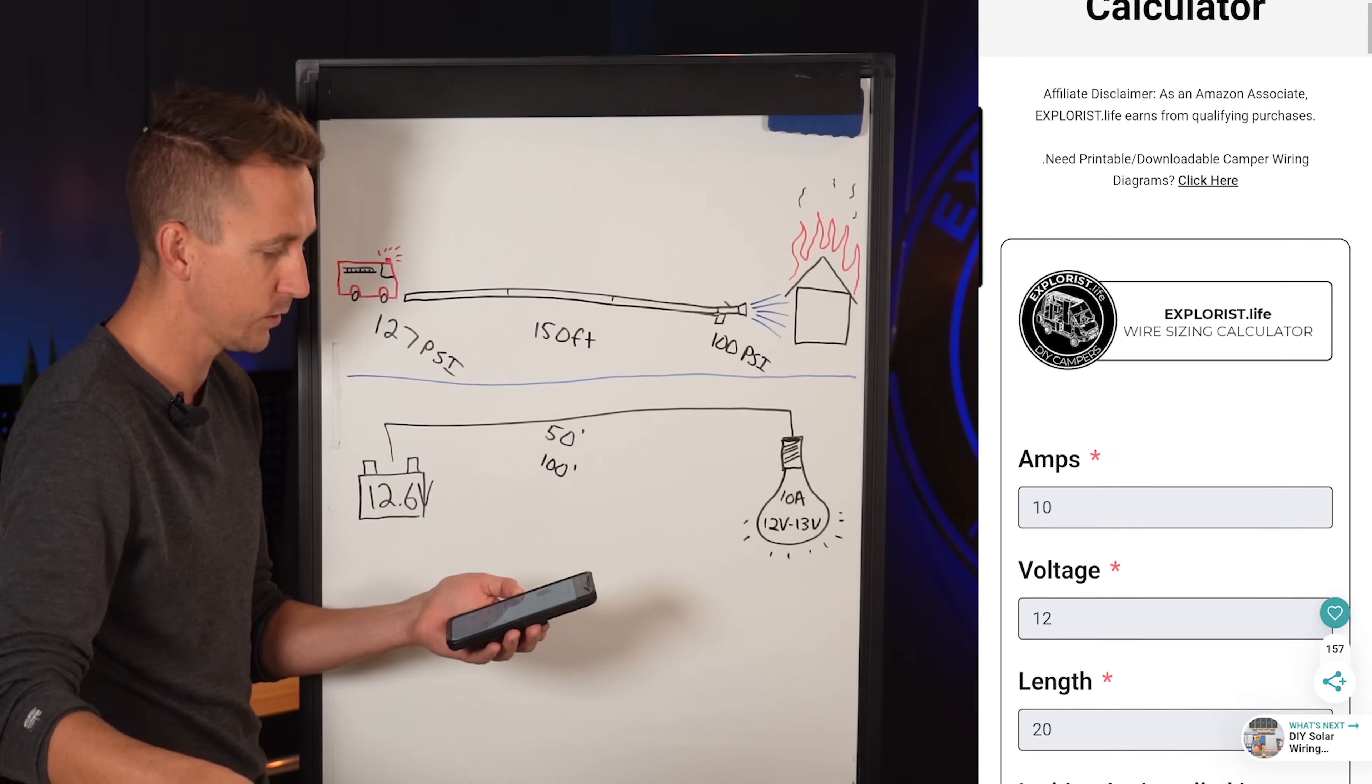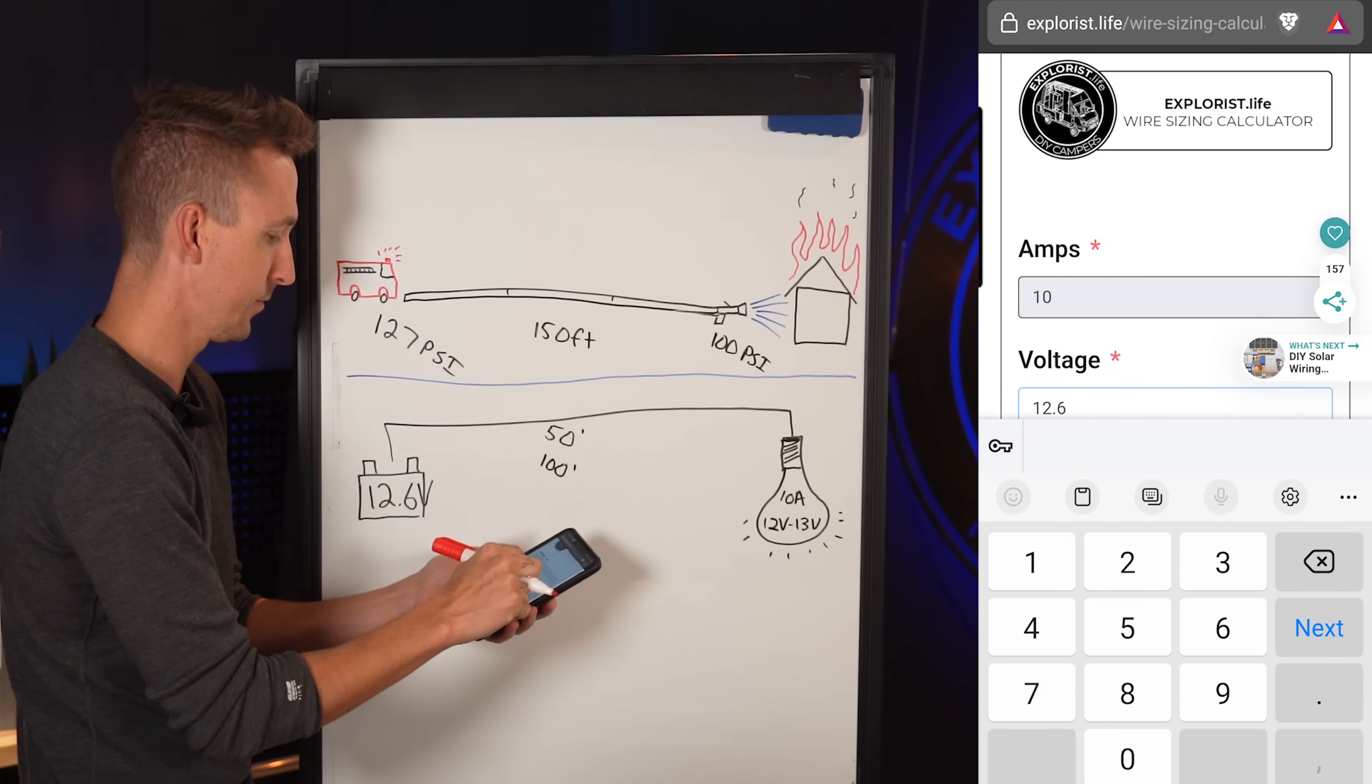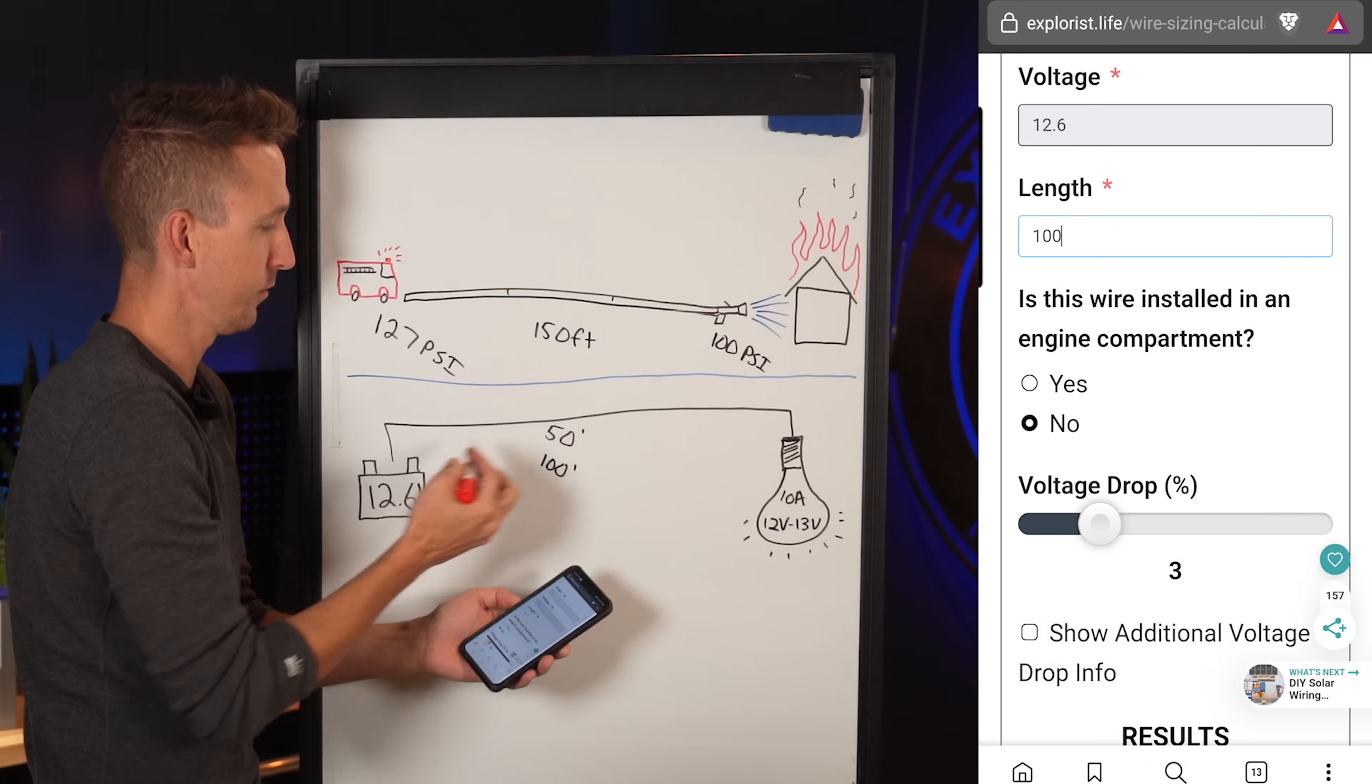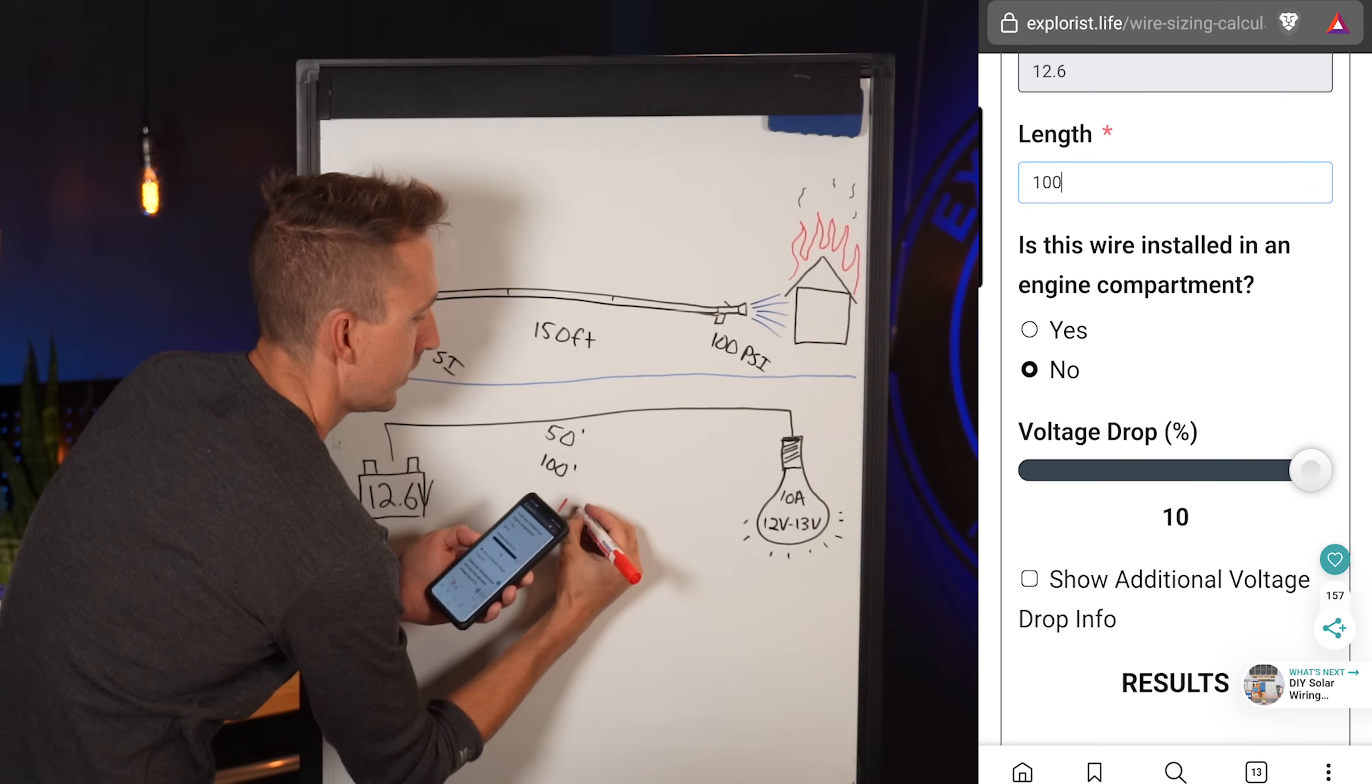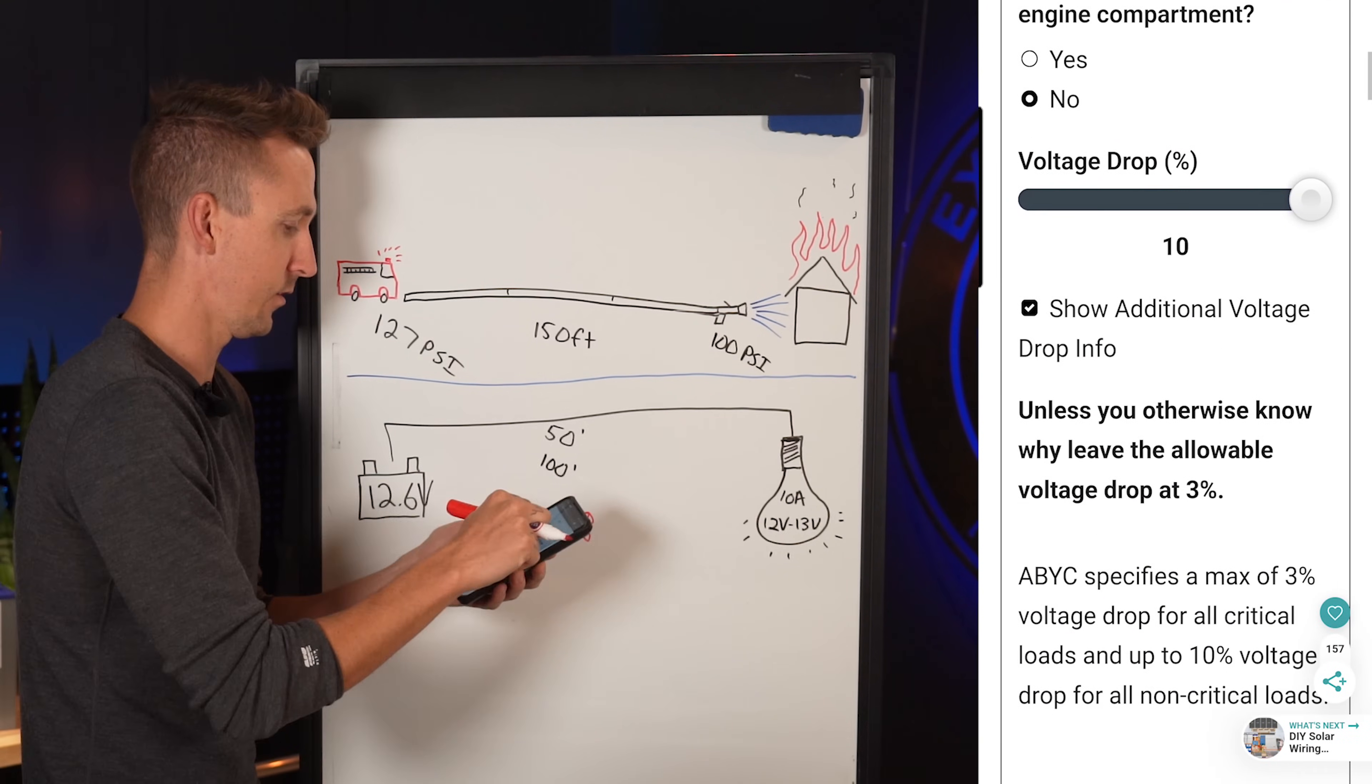So what we have going on here is we have 10 amps at the light bulb. We have 12.6 volts at the battery. We have 50 feet from the battery to the light bulb, 100 feet round trip. We can say we want an allowable 10% voltage drop since it's a non-critical load, just let's call it a light that's above the kitchen or something like that, it doesn't really matter.